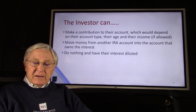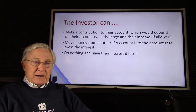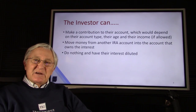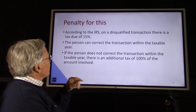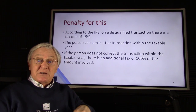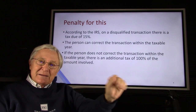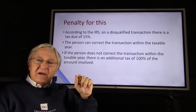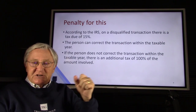Or they can do nothing and have their interest diluted. But what if the client says, I'm not going to do that — I'm just going to put money in my IRA and make the contribution and face the consequences? On a disqualified transaction, which would be making a second contribution to your IRA in a year or taking money out of your own pocket and paying for the capital call, according to the IRS there's a 15% penalty on, let's say, the full $10,000.